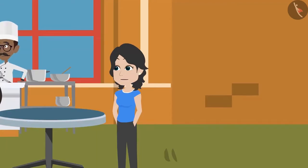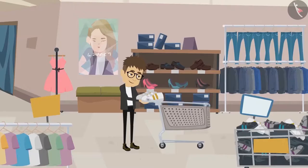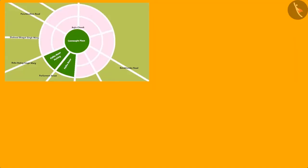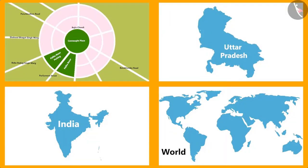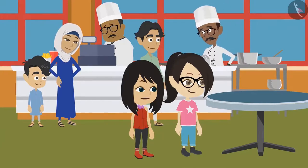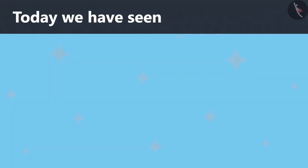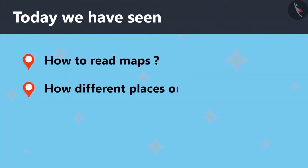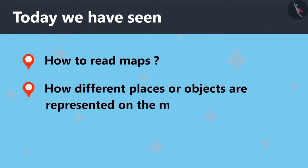Every place does not have a map, but bigger places like shopping malls and fairs will have a map. And there are maps of cities, states, countries, and the world. Let us quickly eat something and explore the rest of the park — there are so many more rides to see. So children, today we have seen how to read maps, and we have also seen how different places or objects are represented on the map.